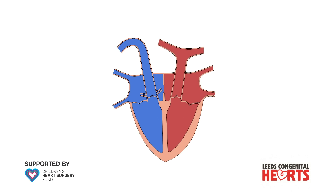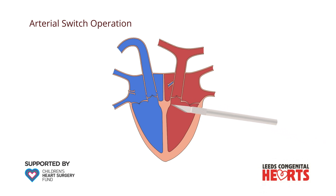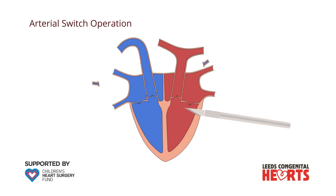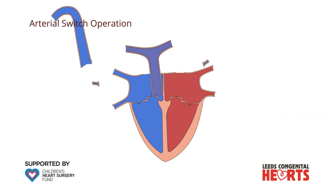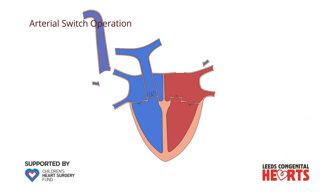Surgical correction of transposition of the great arteries is achieved by performing an arterial switch operation, usually in the first few weeks of life. After opening the chest through the middle of the breastbone, the coronary arteries are detached from the aorta and both the aorta and pulmonary artery are cut just above where they leave the heart. Each artery is moved and reconnected to the correct side of the heart, the aorta to the left ventricle and the pulmonary artery to the right ventricle.